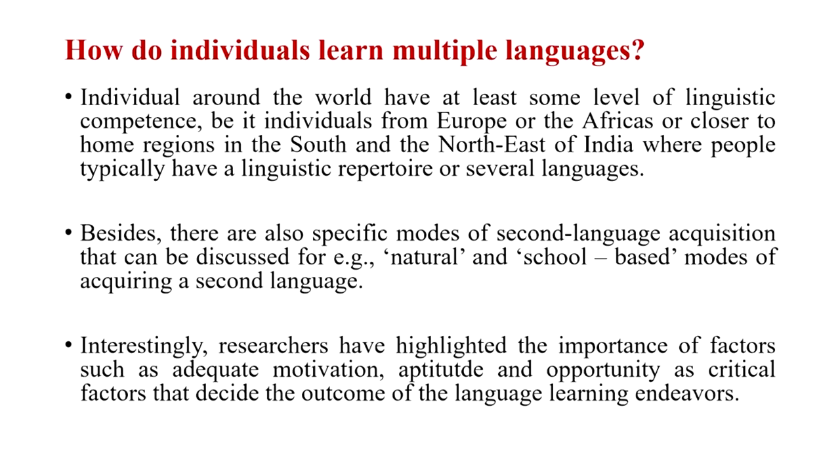How do individuals learn multiple languages? Individuals around the world have at least some level of linguistic competence — from Europe, Africa, or closer to home in regions of south India and northeast India, where people typically have a broader linguistic repertoire. How do people do that? There are specific modes of learning language and second language acquisition: did you learn it naturally at home, did you learn using school-based instruction, how did you pick up a language eventually?